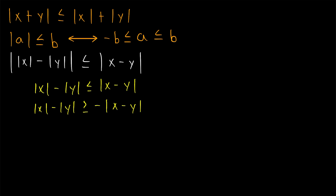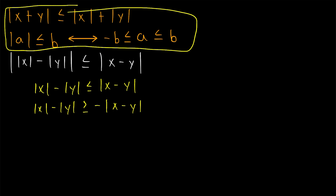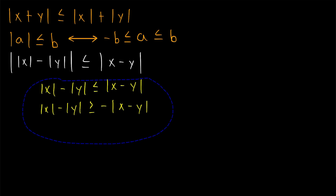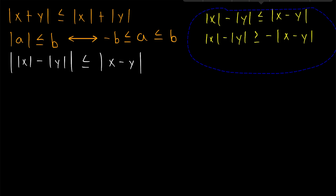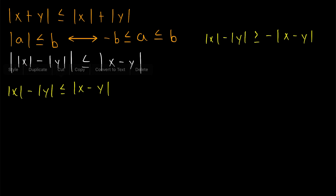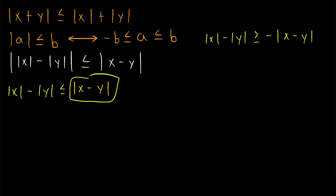I'll leave links in the description to proofs of both of these results that we're using in this proof. Let's get to it — these are the two inequalities we need to prove. Let's begin by proving that the absolute value of X minus the absolute value of Y is less than or equal to the absolute value of X minus Y.